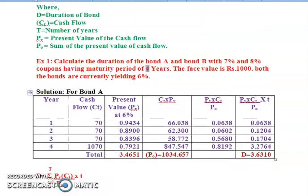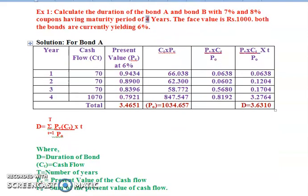Let us now understand bond duration with the help of an example. Calculate the duration of Bond A and Bond B with seven percent and eight percent coupons respectively, having a maturity period of four years. The face value is rupees 1000. Both bonds are currently yielding six percent. We will solve Bond A first, then Bond B.